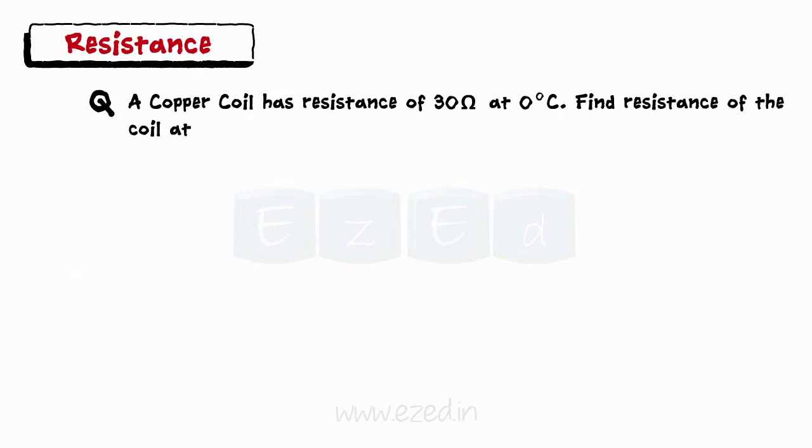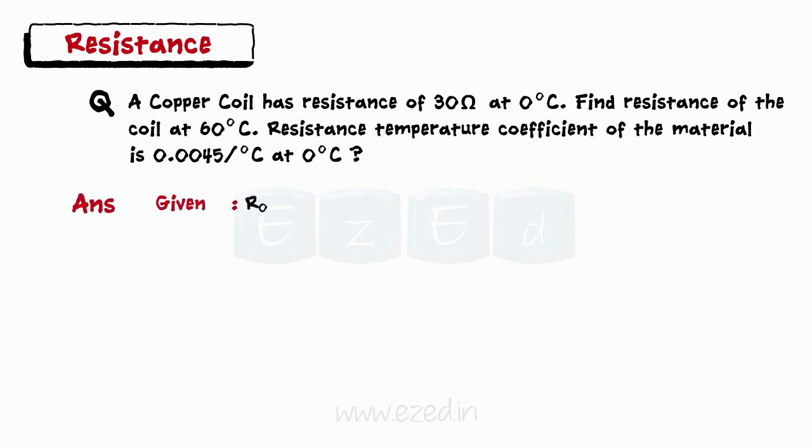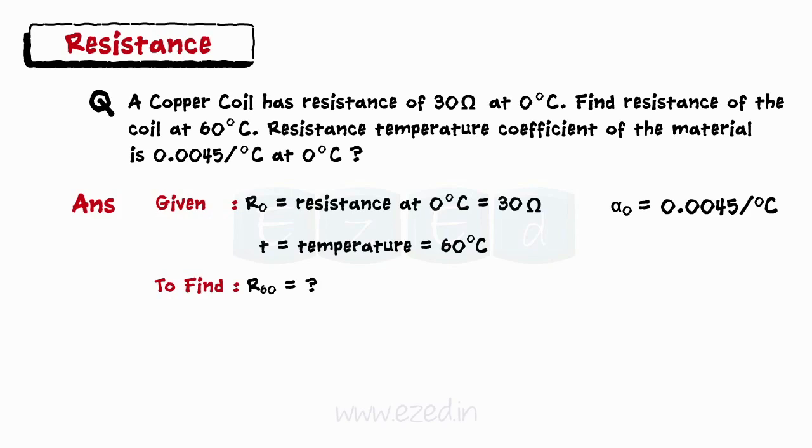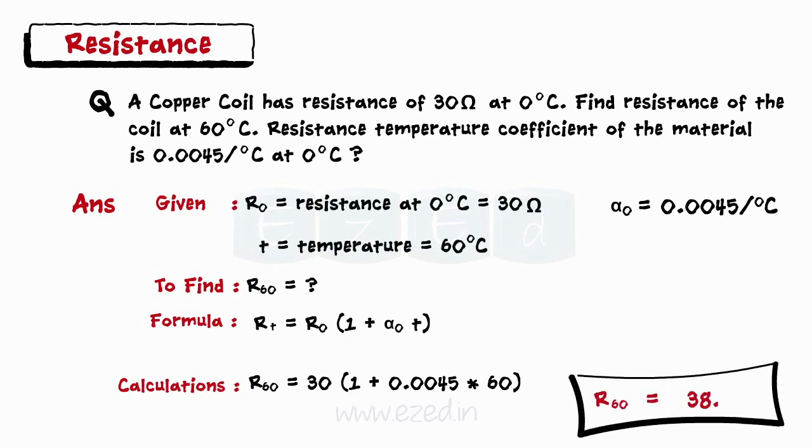Let's take an example. A copper coil has resistance of 30 Ohms at 0 degree Celsius. Find the resistance of the coil at 60 degree Celsius. Resistance temperature coefficient of copper is 0.0045 per degree Celsius. So, let's see the given data. We have resistance at 0 degree Celsius equal to 30 Ohms. Temperature T equals 60 degree Celsius. Alpha 0 equals to 0.0045 per degree Celsius. And we need to find resistance of a coil at 60 degree Celsius. We know the formula RT equals R0 into 1 plus alpha 0 into T. Putting the given values, we get resistance at 60 degree Celsius equals 38.1 Ohms.